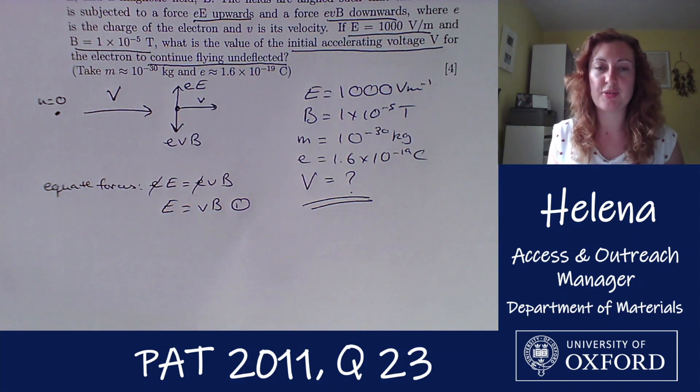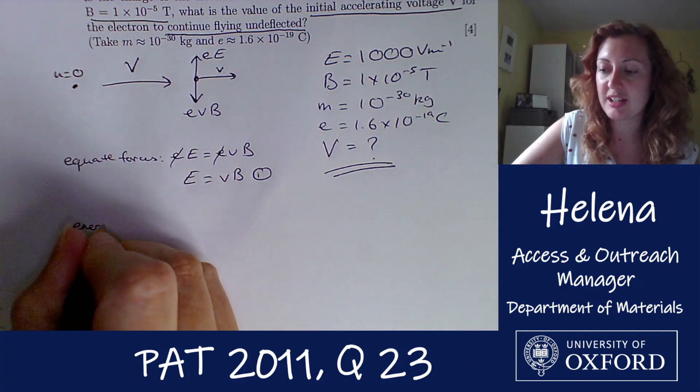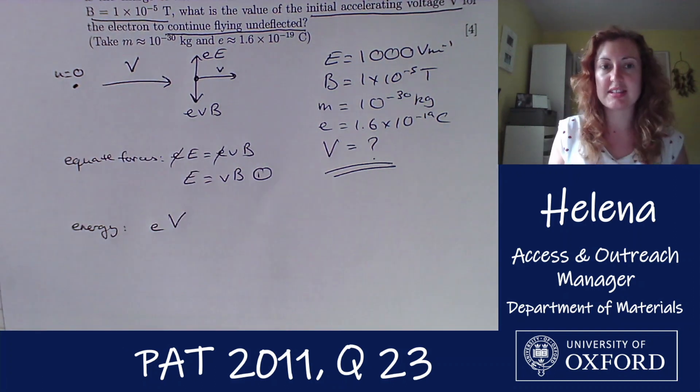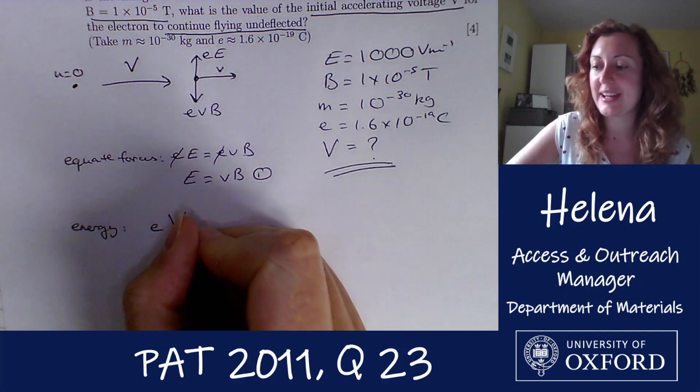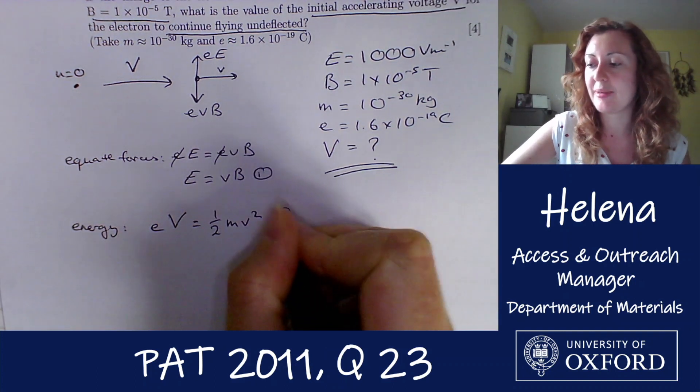So we've thought about the forces. What else have we got to think about? Well we can think about the energy. So as this electron is accelerated from rest through a potential V, we know that it's going to be given an energy equal to its charge times the potential V, so eV. And we know that that's going to be converted to kinetic energy, so we can equate that to ½mv². And now we have our second equation.